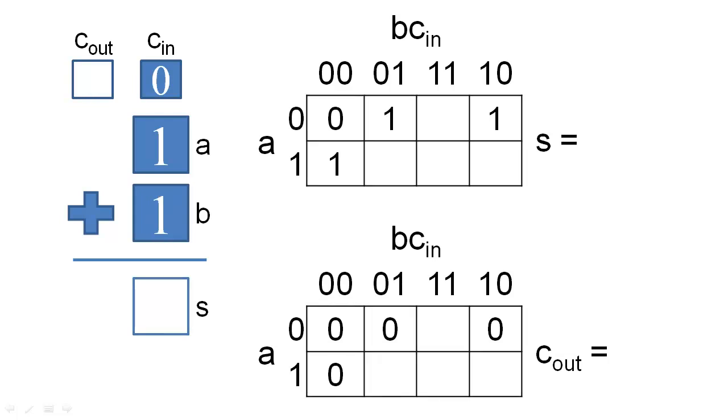If two of the input bits are one, then we will find that the sum is zero, but that the carry out is one. Finally, if all three inputs are one, the sum is one, and the carry out is one.